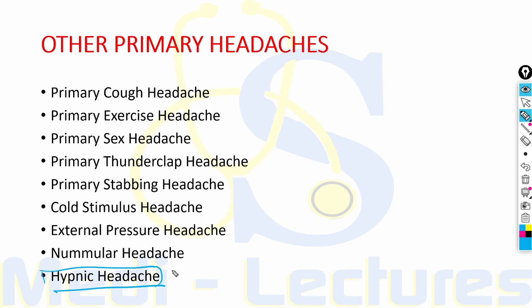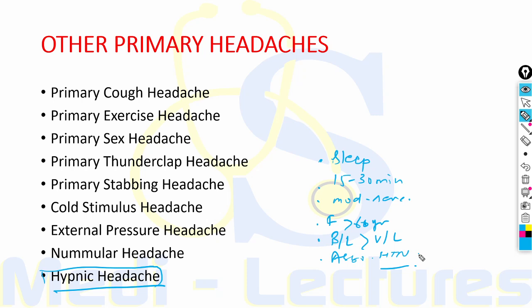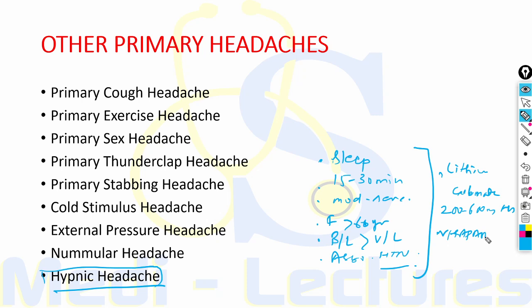Hypnic headache begins a few hours after sleep onset — a sleep-onset headache of usually 15 to 30 minutes in duration, moderate to severe in intensity, usually generalized but can be unilateral, throbbing, usually seen in females above 60 years of age, more commonly bilateral, and usually associated with hypertension. Therefore hypertension control is very important. Treatment: lithium carbonate 200 to 600 mg at bedtime, or verapamil 160 mg as an alternative, and caffeine 60 mg at bedtime is very important.